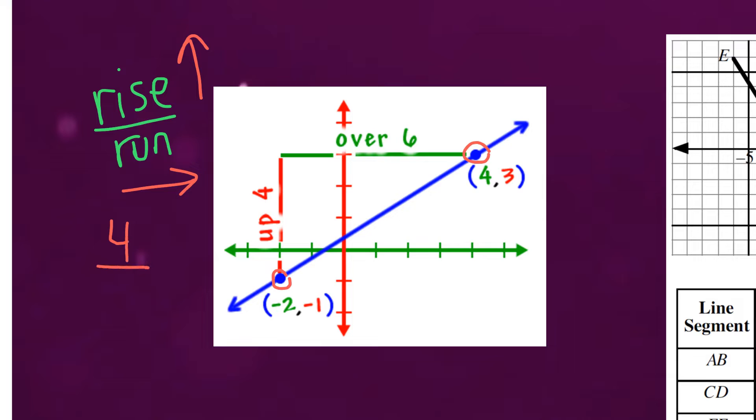In this example we can see that the rise is four and the run is six. By the way if the rise is going down then it would actually be negative. But the run would always be positive.